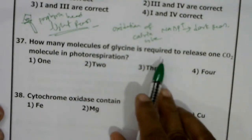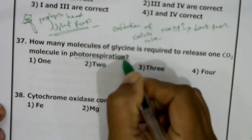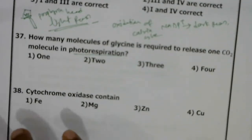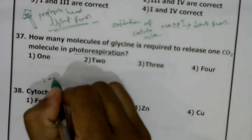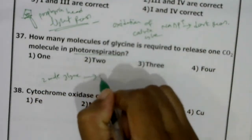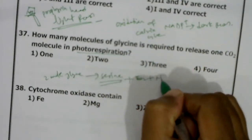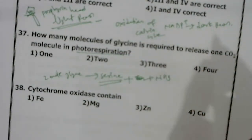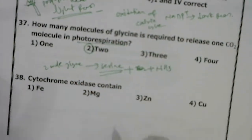How many molecules of glycine are required to release one CO2 molecule in photorespiration? The process of photorespiration occurs across three organelles: chloroplast, peroxisome, and mitochondria. In the mitochondria, two molecules of glycine combine to form serine with the release of CO2 and ammonia. So two molecules of glycine are required. Correct answer: 2.